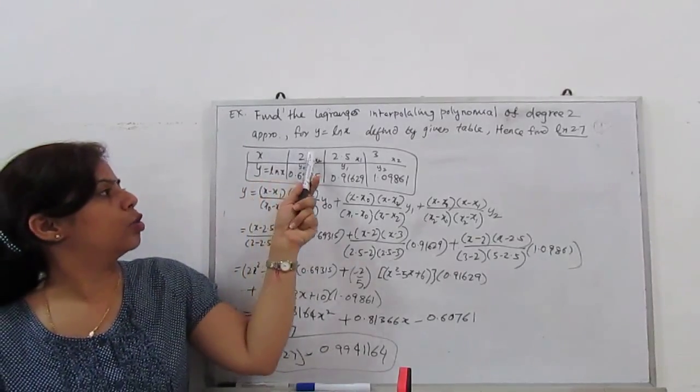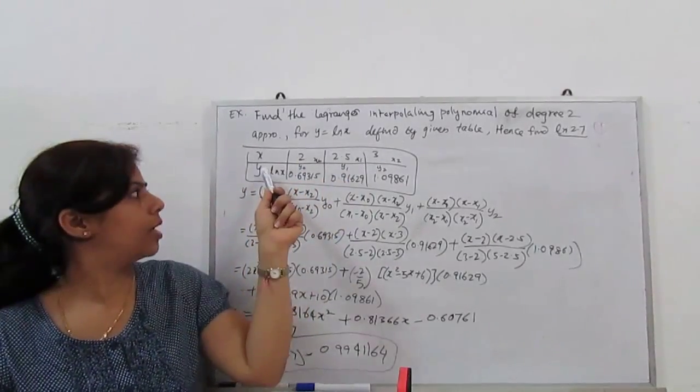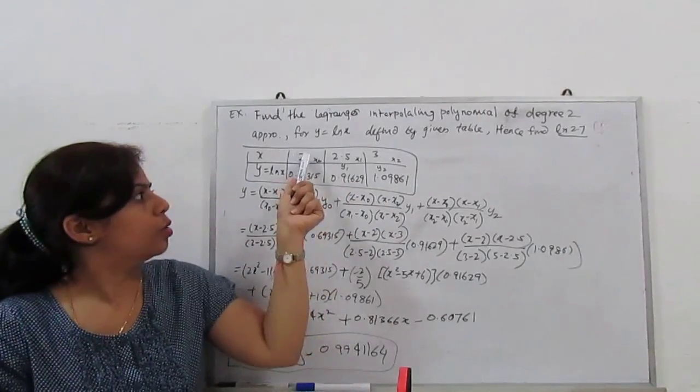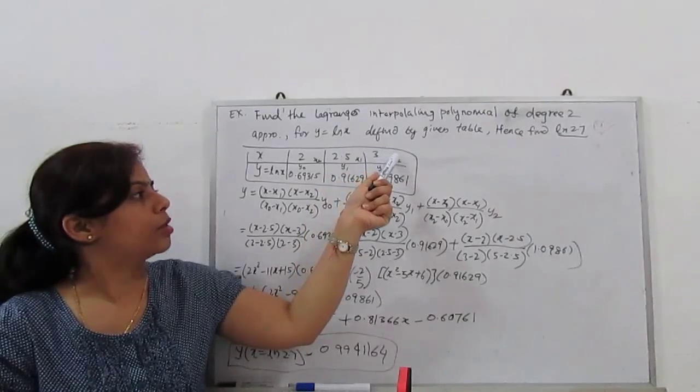Approximate y equals ln(x). Our function is log of x. Given table: at the end find log value at 2.7. Where x equals 2, 2.5, 3.